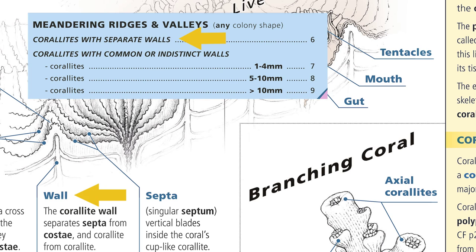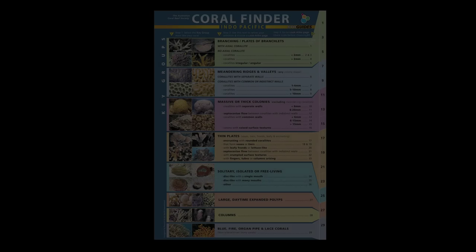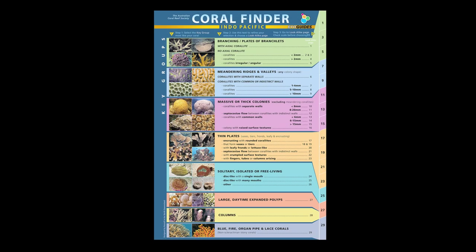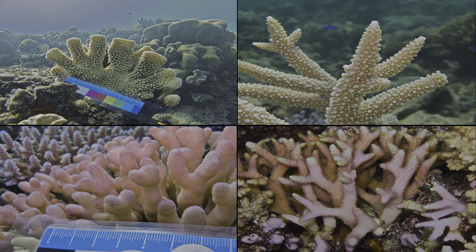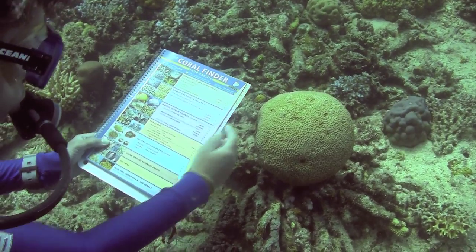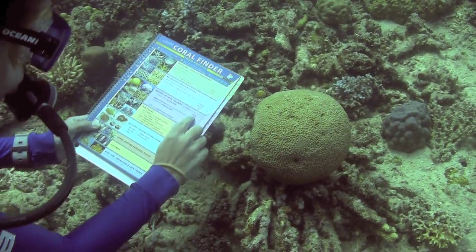Why is this important? It's because text has to be read and understood. What the eye and brain sees is not subject to translation and interpretation in the way that text is. For instance, all of these corals are branching — it took you less than one second to see and understand that. By using images and avoiding text, the Coral Finder can simplify the problem of 'what coral is that?' to a series of simple visual choices. For beginners, this is the most efficient way to learn.